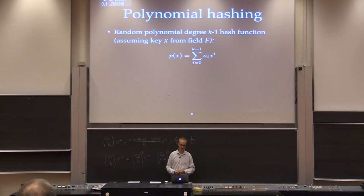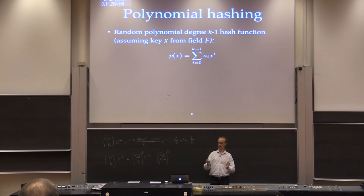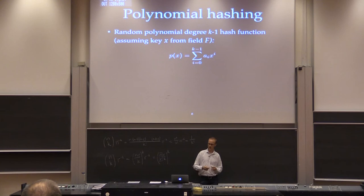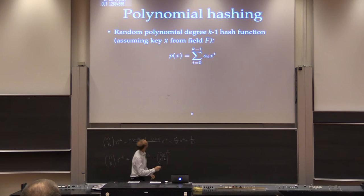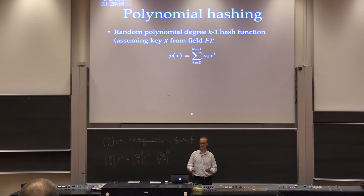What we do is look at the inputs as numbers in some field — you can think of it as numbers modulo p for some prime p. Then we take a random degree k−1 polynomial hash function. We simply choose random coefficients a_0, a_1, up to a_{k−1}, and our hash function just evaluates this polynomial on the input key.